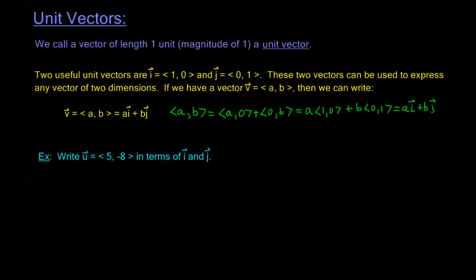Write the vector U = <5,-8> in terms of I and J. This may seem like a very easy example, and indeed it is. This U, by the result we saw, is just equal to my horizontal component 5 times the unit vector I plus my vertical component -8 times the unit vector J.